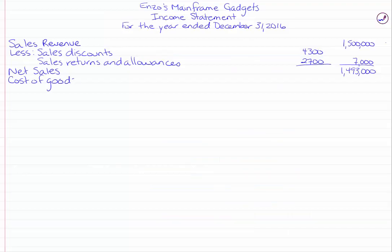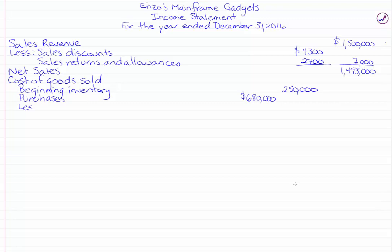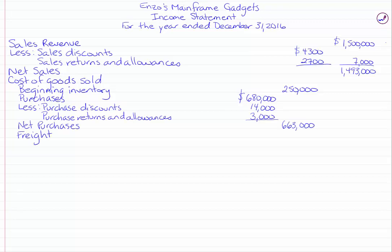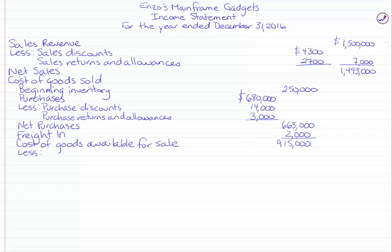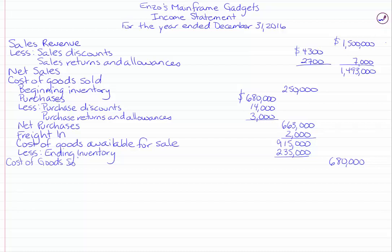The calculation for cost of goods sold will always be the same. We're going to start with our beginning inventory — that $250,000 is our beginning inventory amount. Add your net purchases, which are calculated by taking your purchases minus purchase discount minus purchase returns and allowances. Then add freight in, and that gives you cost of goods available for sale. The last step is to subtract our inventory balance at December 31st, 2016 of $235,000.